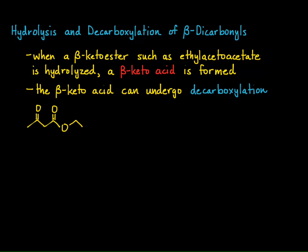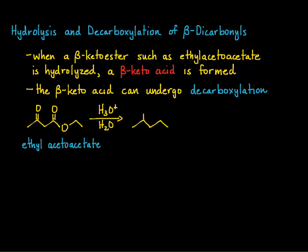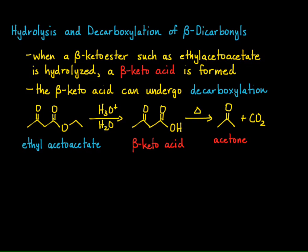Here is an example using ethyl acetoacetate. If I take ethyl acetoacetate and hydrolyze it — esters undergo hydrolysis in acidic or basic conditions, and in acidic conditions we get the carboxylic acid — so now I have a beta-keto acid. I take that beta-keto acid, heat it up, and I make acetone and carbon dioxide that comes off. So we can take a beta-keto ester and make a ketone from it.